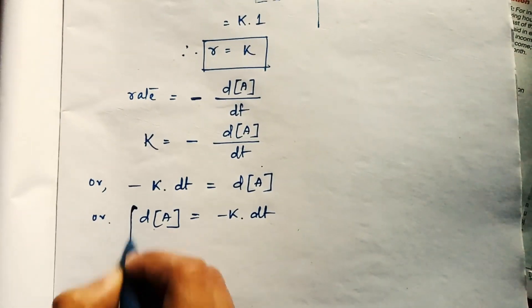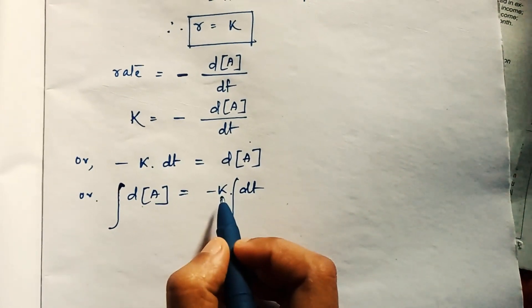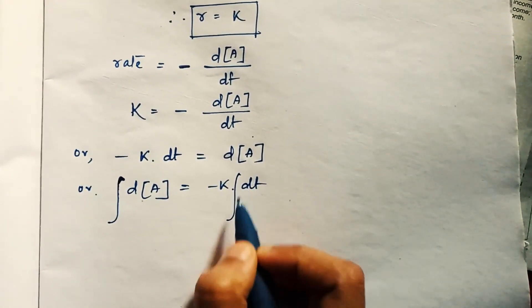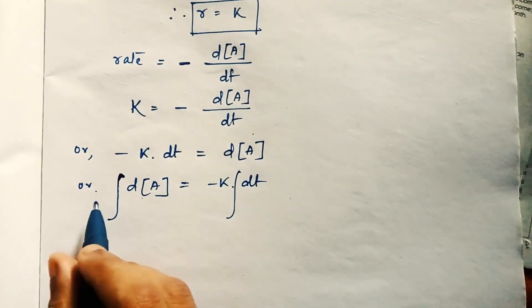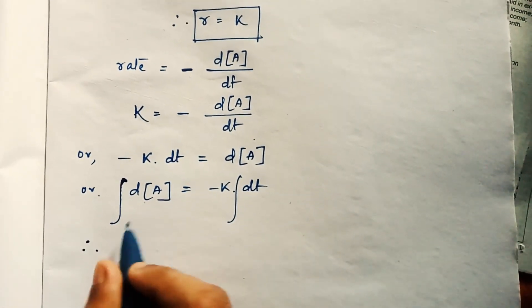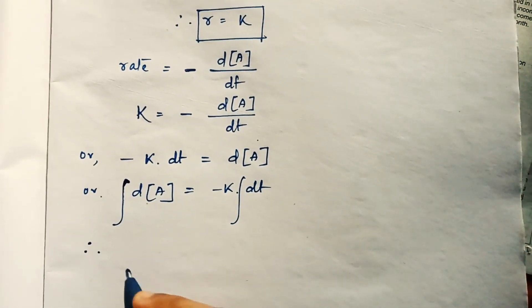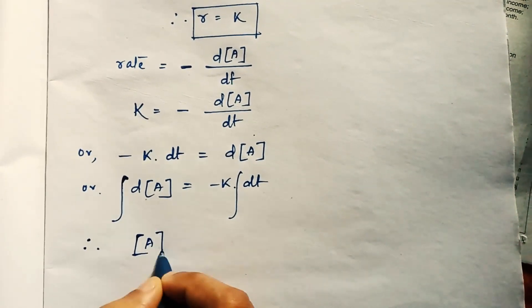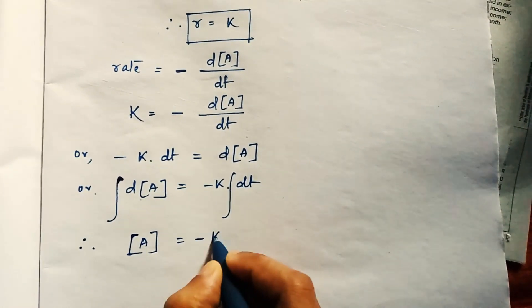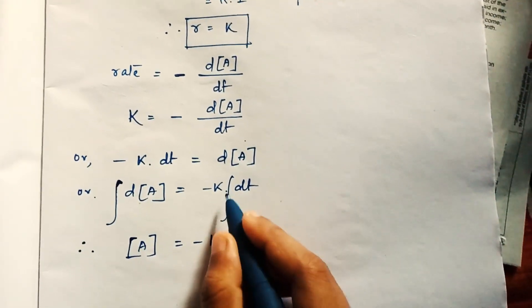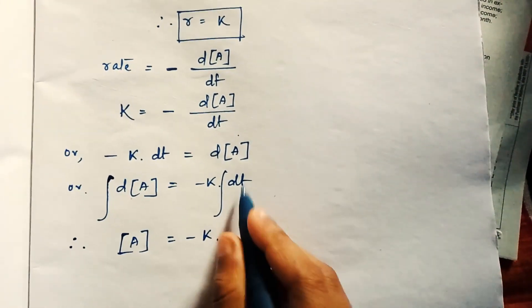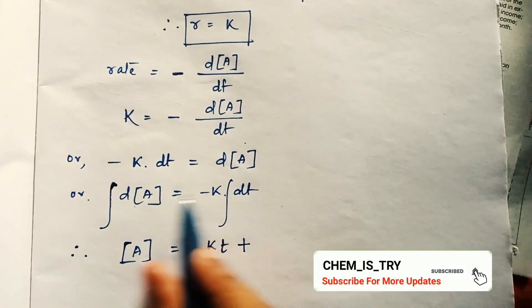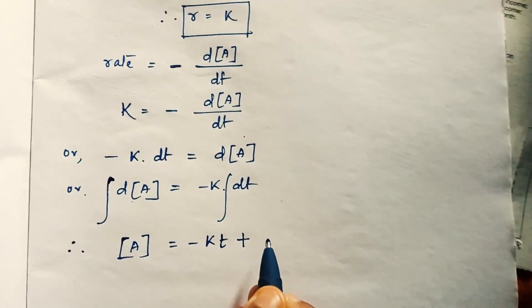Now we perform integration on both sides. Since k is a constant, the integration sign is placed before d[A] on the left side. The integration and the derivative cancel each other, leaving A = -k · t plus an integration constant C.